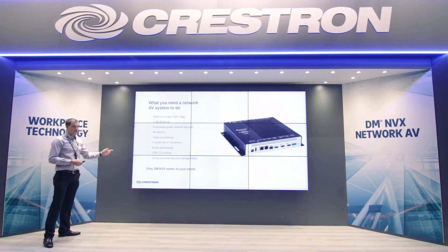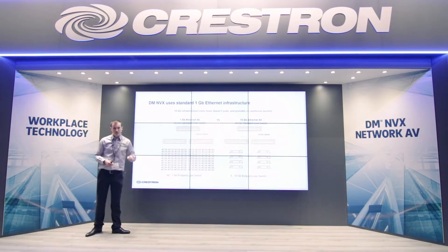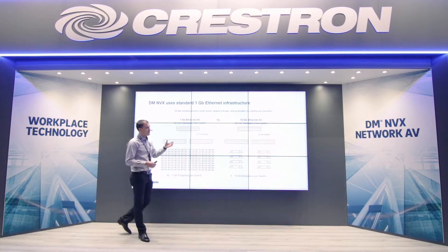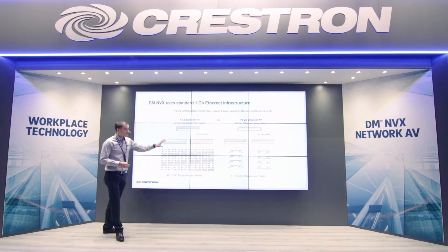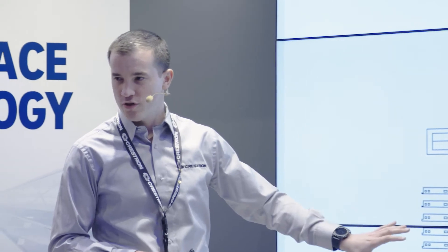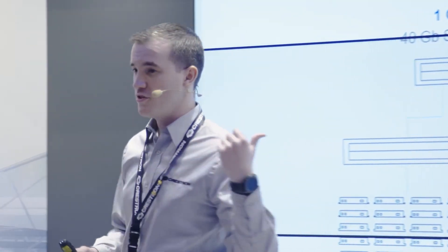MVX is covering all those needs. Let's compare a 1 gigabit network AV system with a 10 gigabit network AV system. They are both using the same 40 gig uplink to the core switch. With the 1 gig solution you can connect up to 40 endpoints to your switch, where with the 10 gig solution you can only connect 4. The full calculation shows that gigabit infrastructure will give you 80 endpoints where the 10 gig infrastructure will only give you 8.